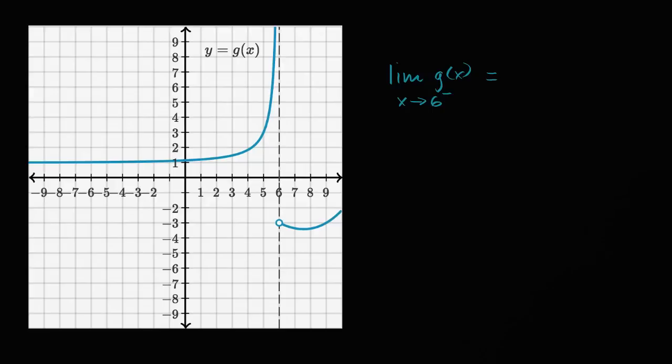Well, to think about this, let's just take different x values that approach six from the left and look at what the values of the function are. So g of two looks like it's a little bit more than one. g of three, it's a little bit more than that. g of four looks like it's a little under two. g of five, it looks like it's around three.